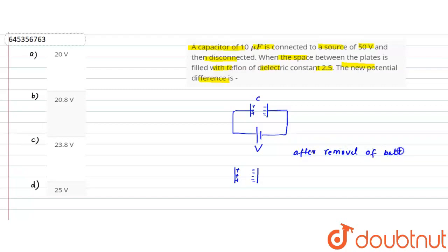We can say that after removal of the battery, our charge remains constant — Q equals constant.